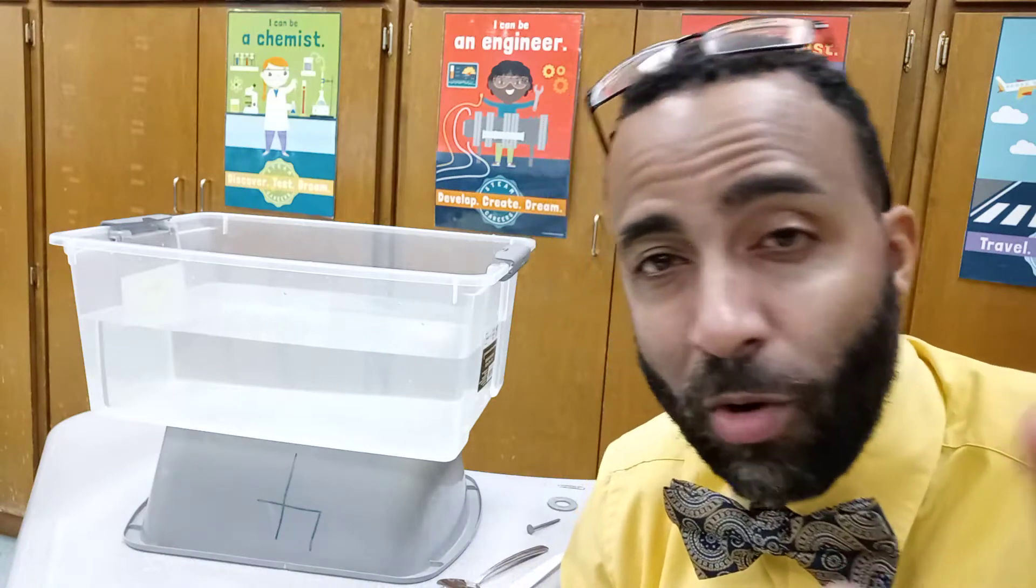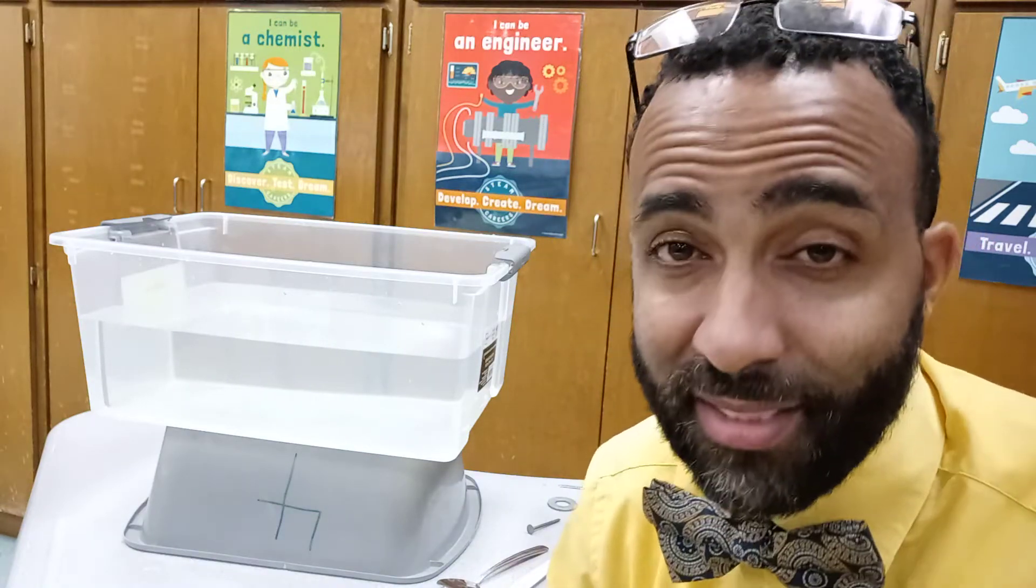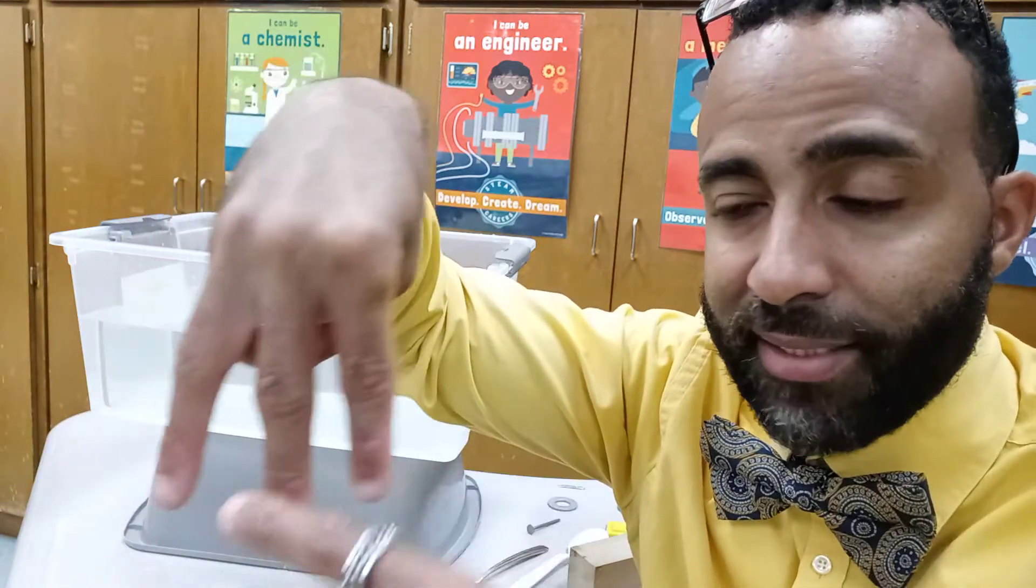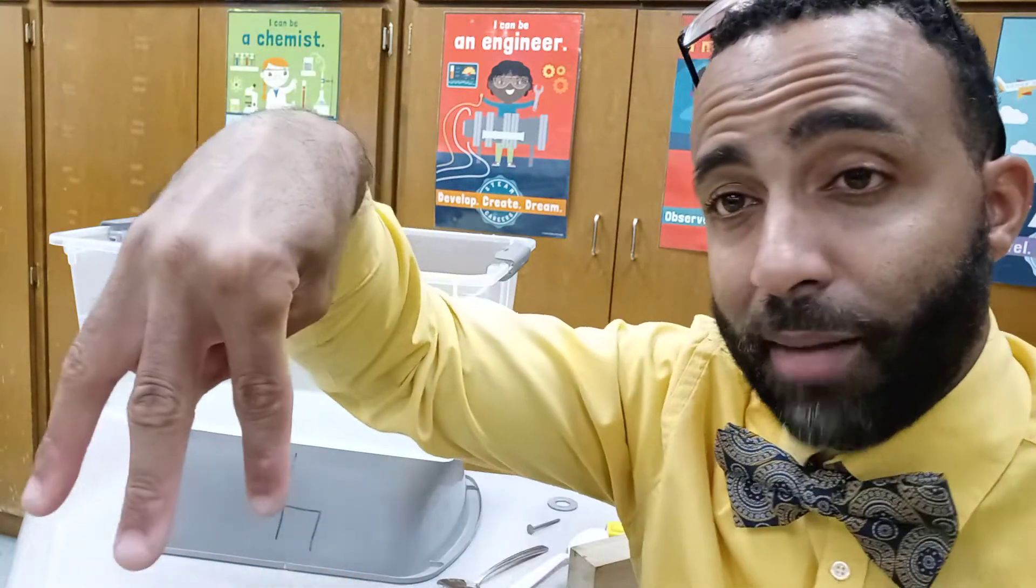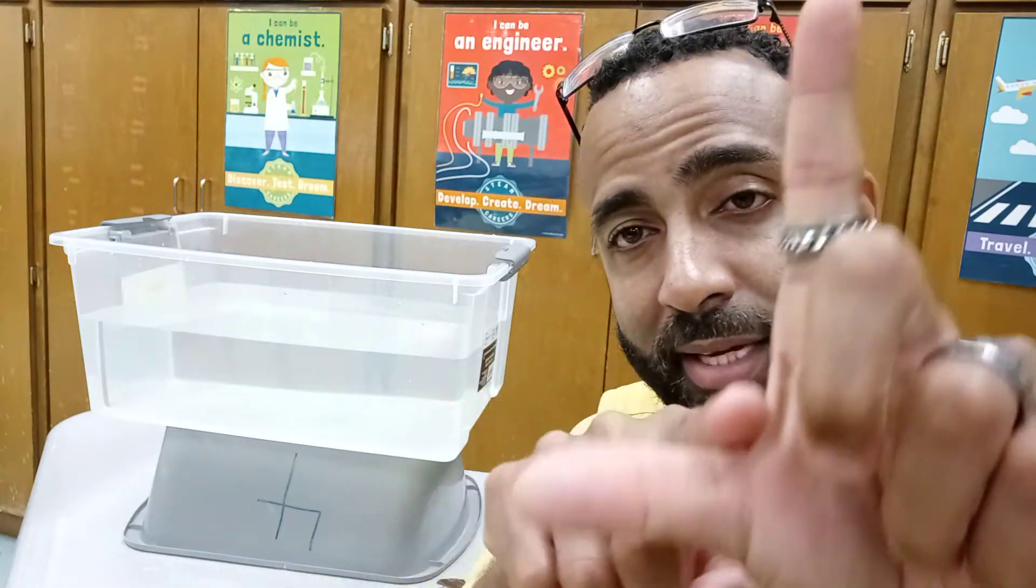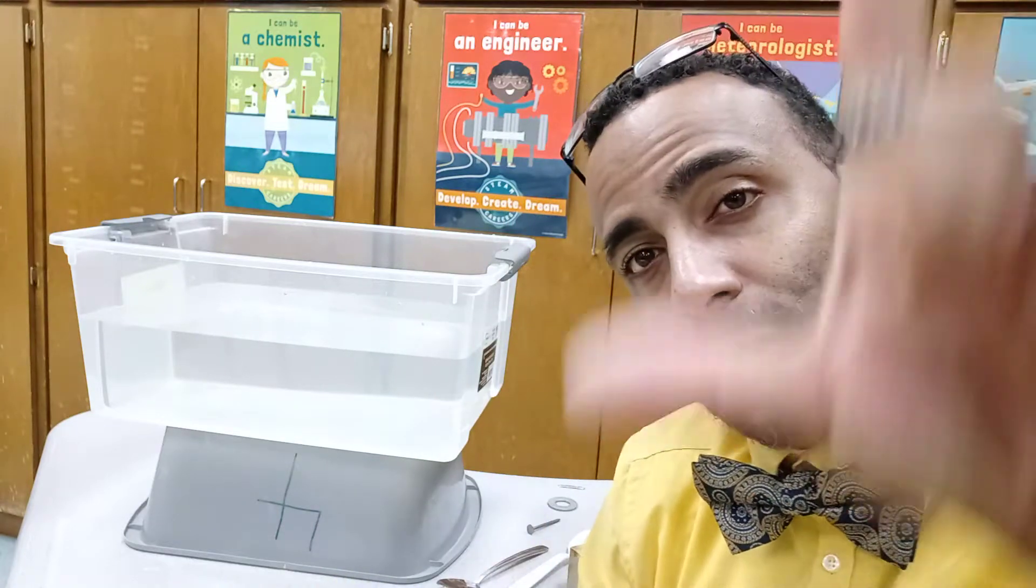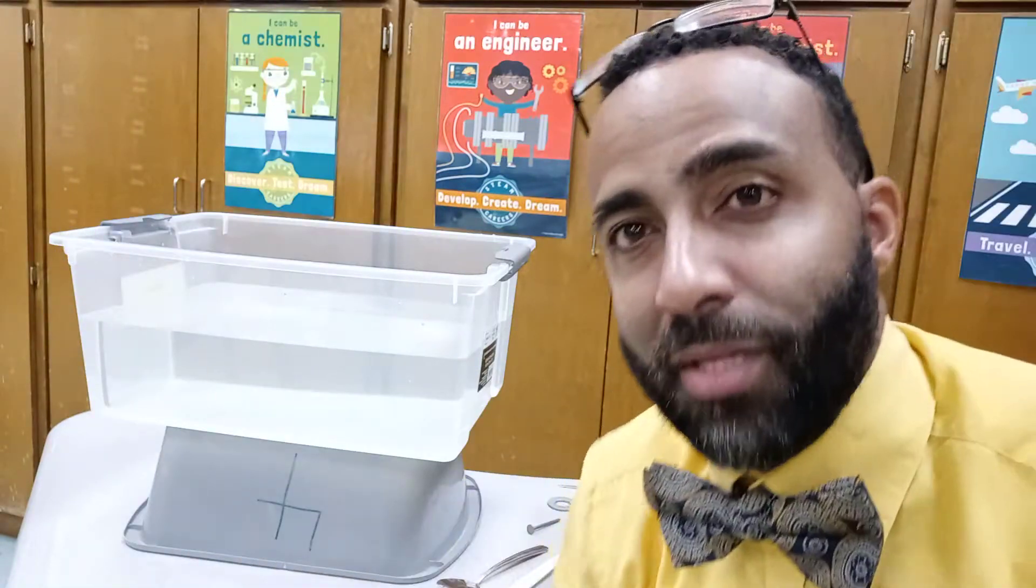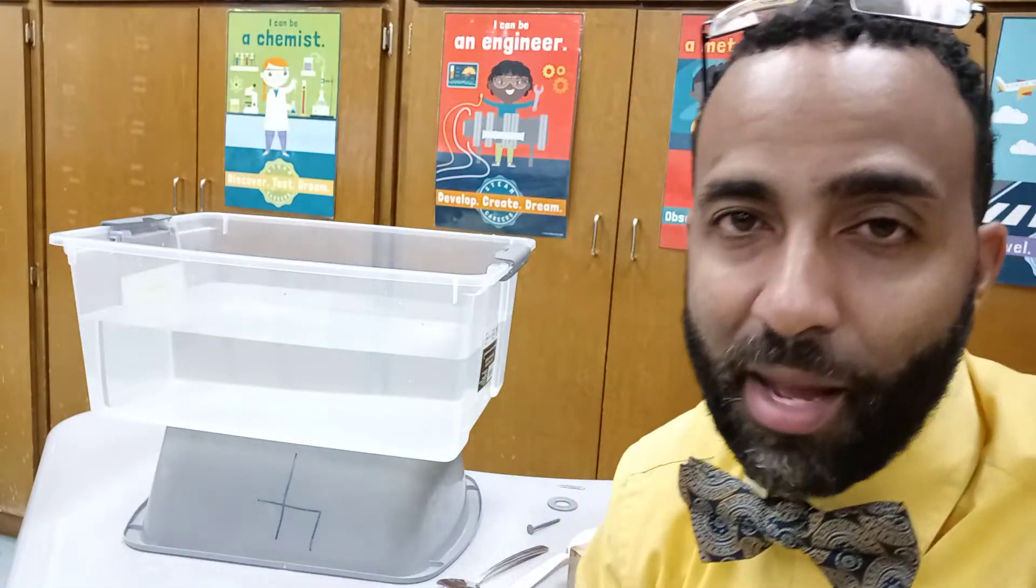We can classify objects based on objects that float and objects that sink. A real big-time word that they use for that is density. And so, one cool way to remember is if I make an M with my fingers, I see that my fingers point down, so if an object is more dense, it sinks in water. And if I make my L with my other finger, an object that's less dense actually floats or goes up in water. So, my fingers can literally help me to remember the connection between less and more dense objects.